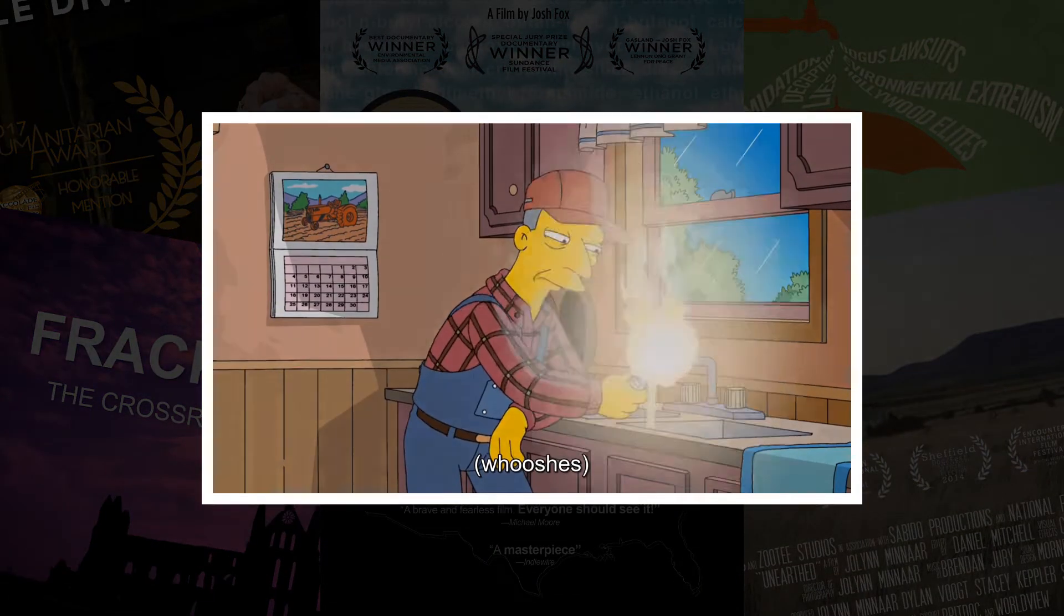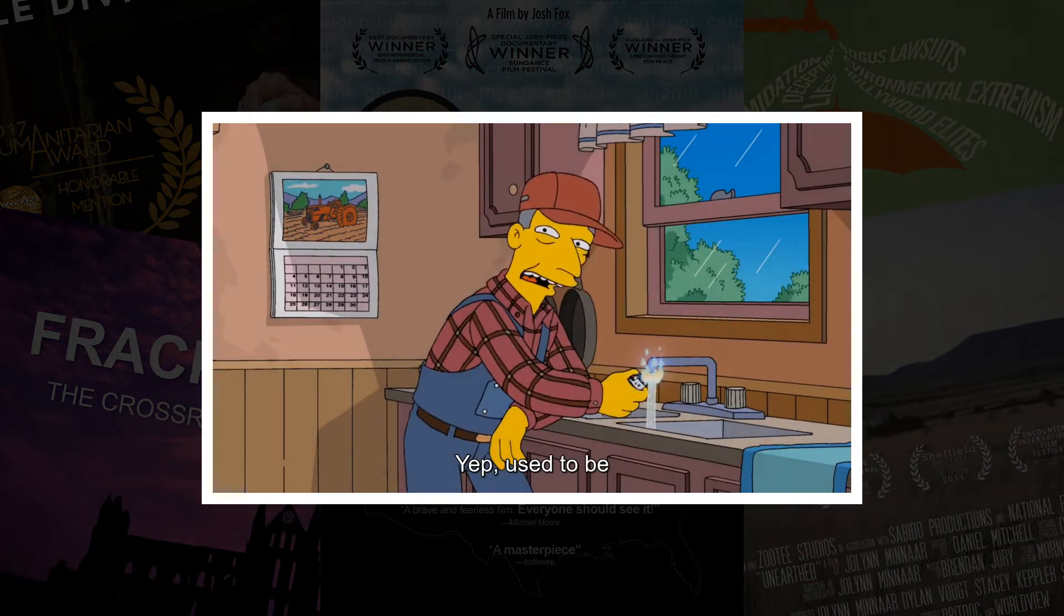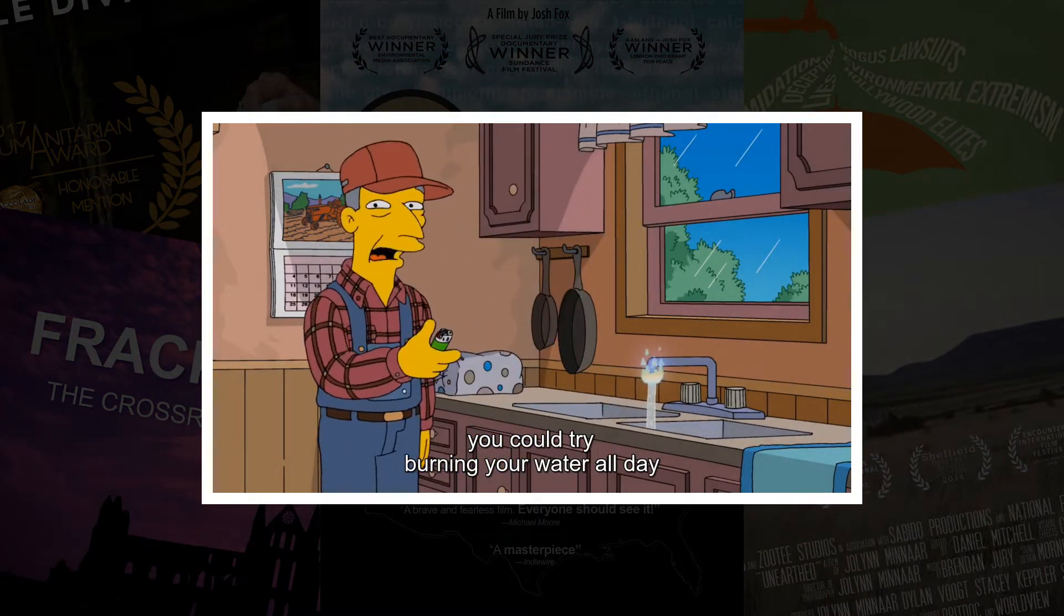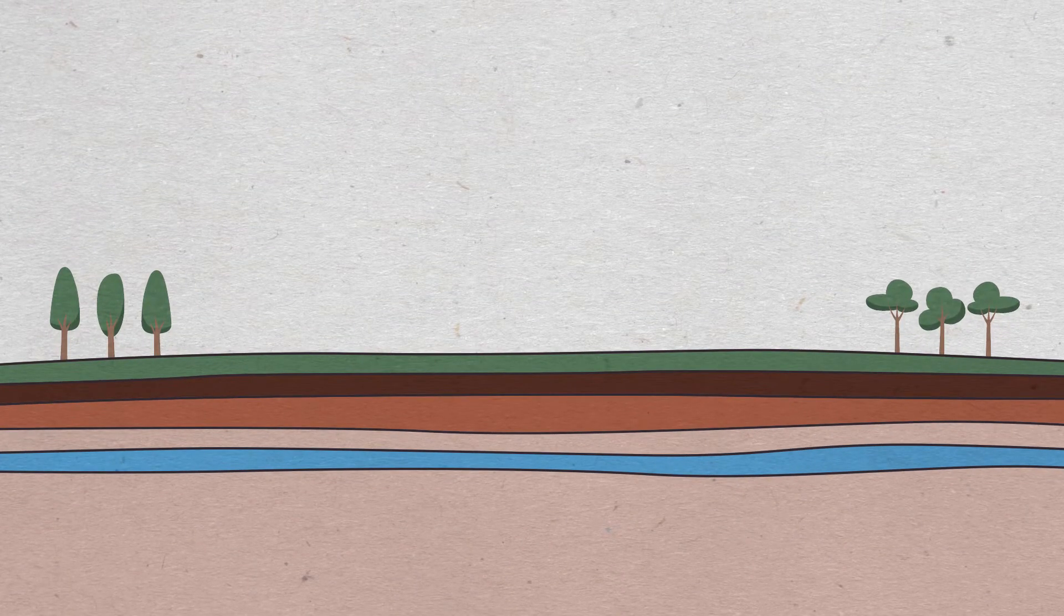One of the main concerns is that fracking contaminates water tables and is poisoning our drinking water. To understand this more, let's dive into the process of fracking an oil well in the Permian Basin, which is located out in West Texas.